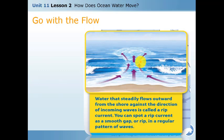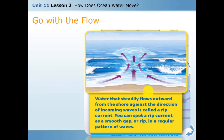You can spot a rip current as a smooth gap or rip in a regular pattern of waves — it does not have any regular wave pattern, just water moving without waves.